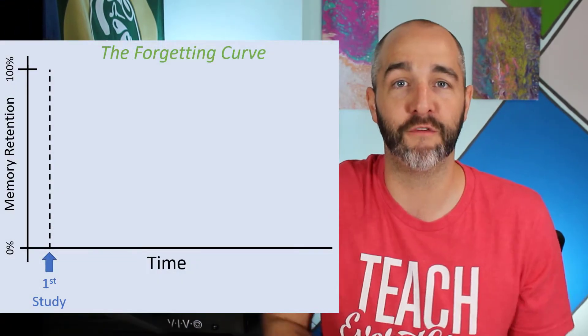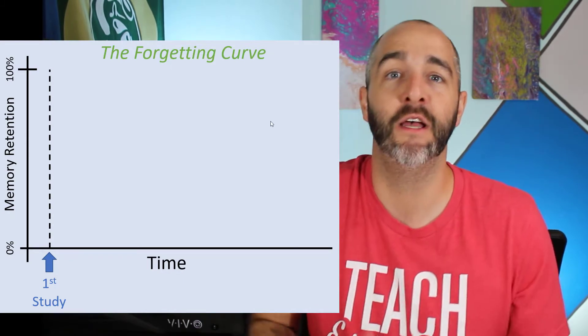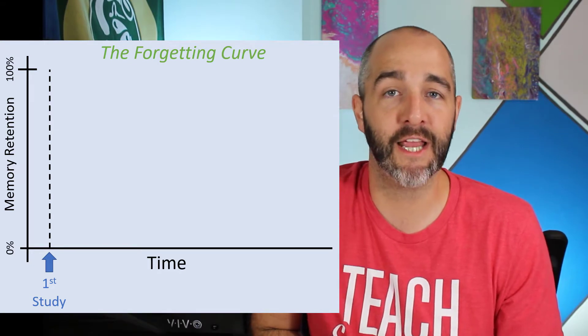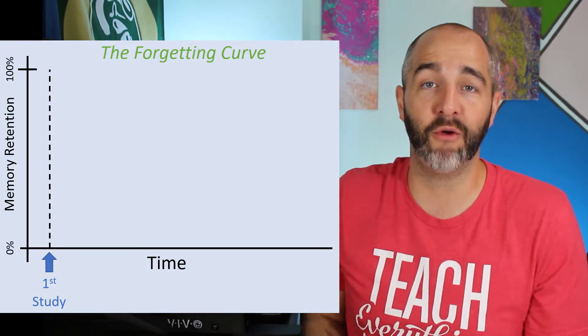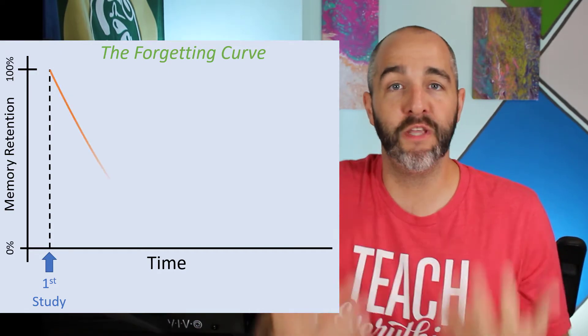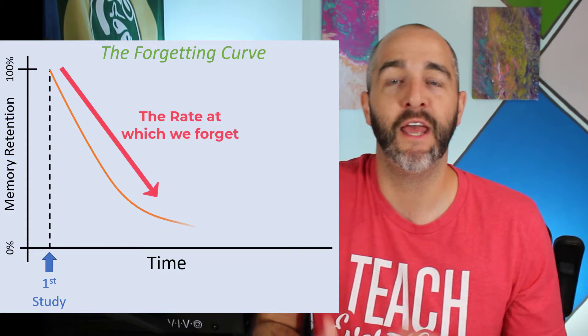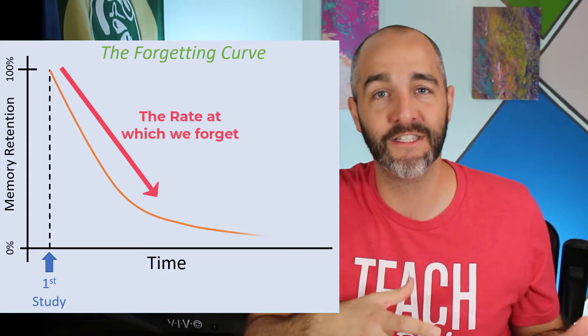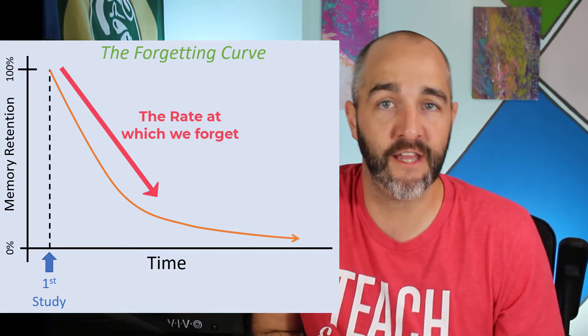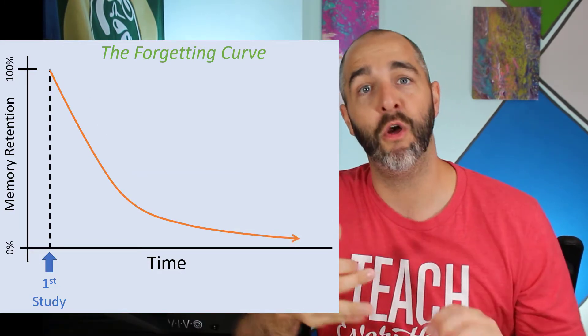So let's talk about forgetting. I'm sure you've had this experience — you learn something new, maybe you take a class on it, and then a few days later somebody asks you what you learned and you struggle to remember it. You've essentially forgotten what you've learned. This is very much a human experience. Scientists have quantified this and they call it the forgetting curve. A German psychologist named Herman Ebbinghaus first uncovered this back in the late 1800s and essentially created what we now know as the forgetting curve. Researchers have studied the rate at which we forget and compared different study methods to see how well we remember material.